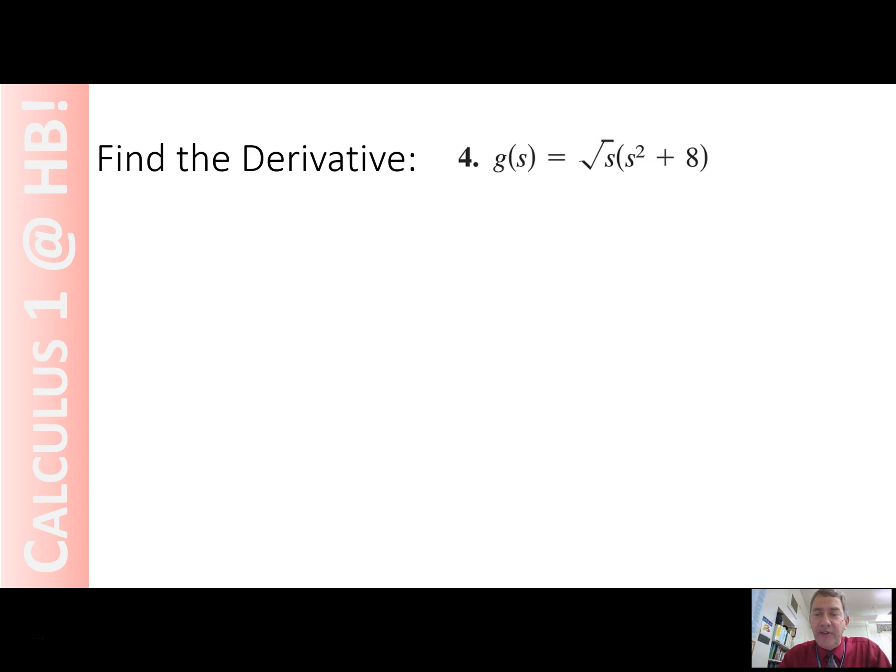We have two functions. We have a function here that's a product of two functions. The first function is square root of s, the second function is s squared plus 8.